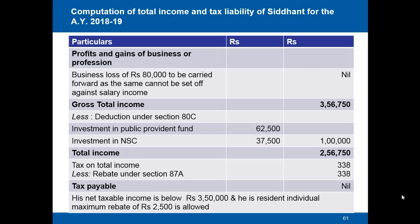He will be allowed a deduction under Section 80C. He has invested rupees 62,500 in Public Provident Fund and rupees 37,500 in National Savings Certificates, totalling rupees 1,00,000. Since this is below the limit of rupees 1,50,000, the entire rupees 1,00,000 is allowed as a deduction. His total income comes to rupees 2,56,750. Tax on the amount above 2,50,000, which is 6,750 at 5%, comes to rupees 338. He is entitled to a rebate under Section 87A since his taxable income is below rupees 3,50,000 and he is a resident individual. The maximum rebate allowed is rupees 2,500, so a full rebate of rupees 338 is granted, making the tax payable nil.